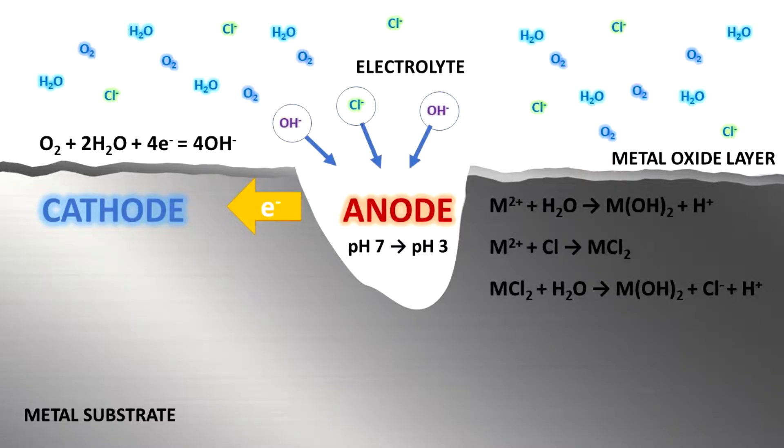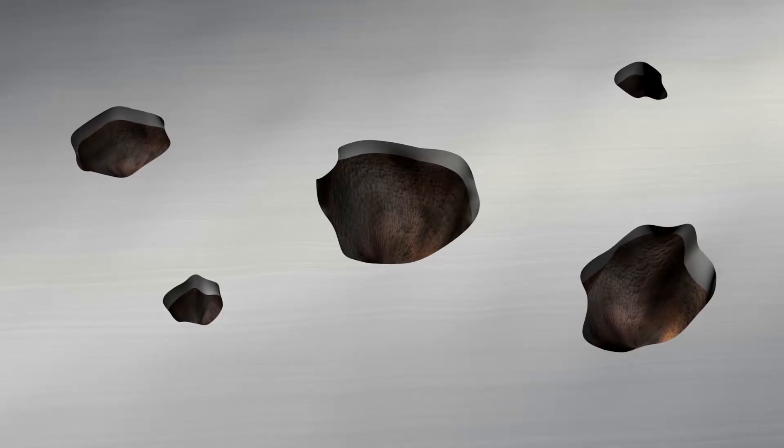In the third stage, the hydroxide and chloride ions react with the metal in the pit, gradually making the anodic region more acidic. As the metal ions dissolve, the pit continues to deepen and widen, creating a small cavity on the metal surface. The pit growth is self-sustaining, as the anodic and cathodic reactions continue to occur, perpetuating the corrosion process.